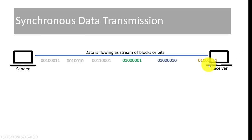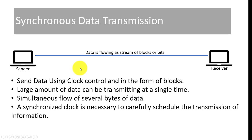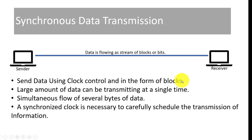Our data, which is in the form of a stream, has whole bytes moving from sender to receiver. This is sending data using clock control in the form of a block. A block is not limited to 1 byte — it can be 2 bytes (16 bits), 4 bytes (32 bits) — it depends on our data block size.